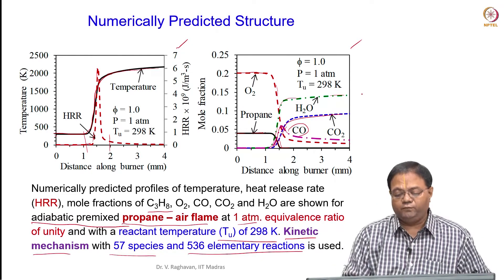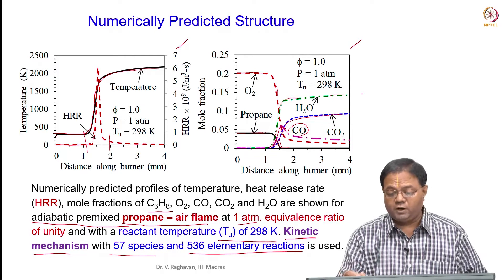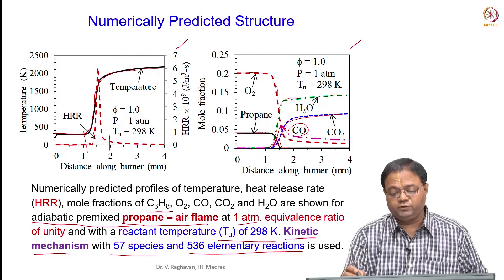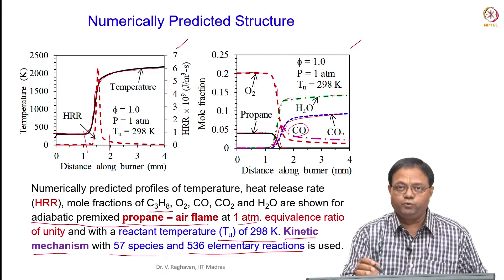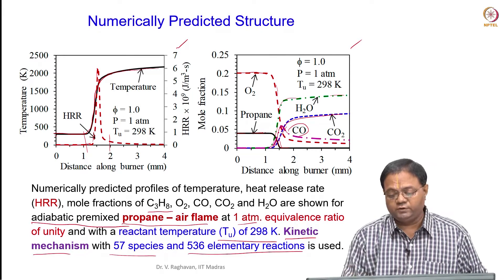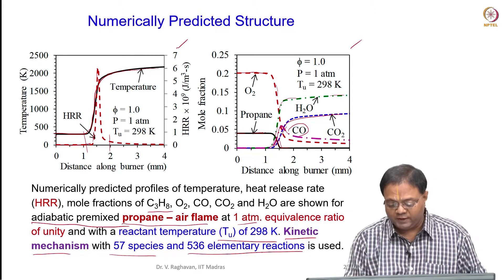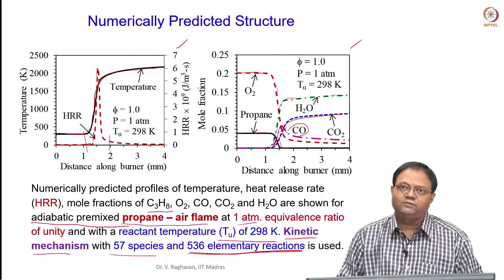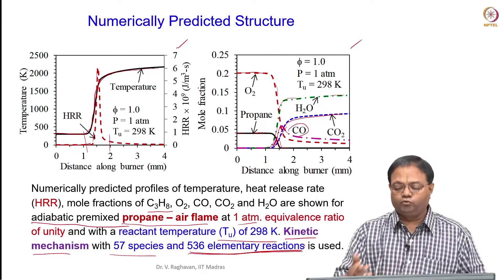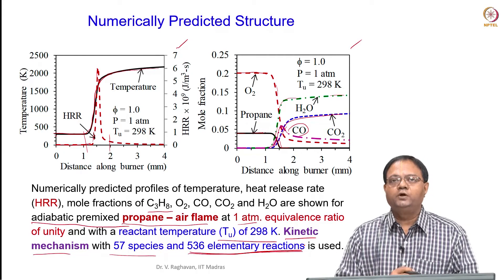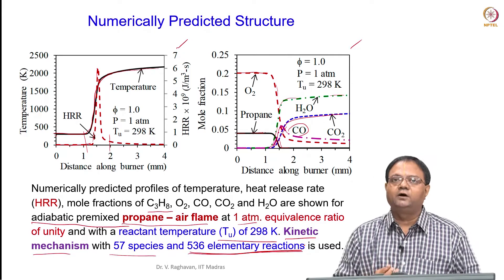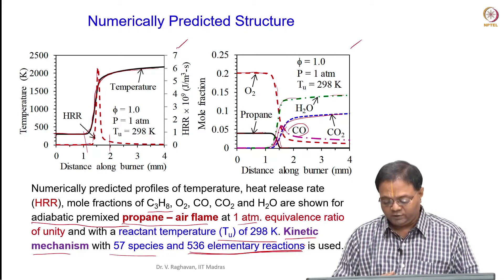This type of detailed analysis has shown here only the major species like CO2, H2O, fuel, and oxygen. We can also see profiles of radicals from the 536 elementary reaction mechanism — for example, OH, H, H2O2, HO2, and metastable species.